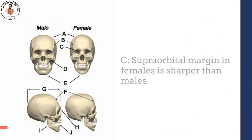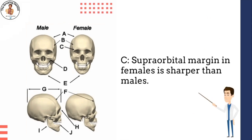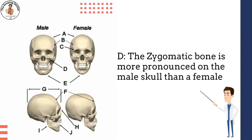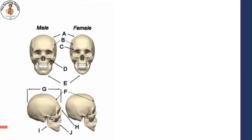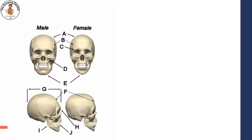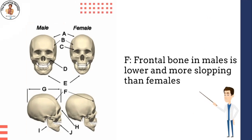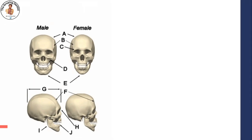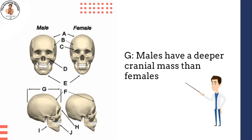C is the supraorbital margin, the ridge above the eyes; in females it is sharper, while in males it is rather round and dull. D is the zygomatic bone, or cheekbone, which lies under the lower eye ridge and is more pronounced on the male skull. E indicates the mandible, or lower jaw bone; for females it is rounded, while for males it is square-shaped. F is the frontal bone: the male forehead is lower and more sloping than the female's. G is the point of cranial mass: men have a deeper, stronger, and denser cranial cavity.